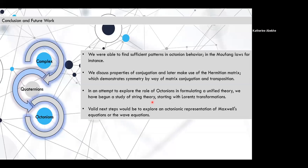We have analyzed the properties of the octonions because of the relationship between the symmetries of division algebras and supersymmetric theories. Although the octonions lack associativity and commutativity, we were able to find sufficient patterns in their behavior. And we did focus on the Lorentz transformations here, but Maxwell's equations and the wave equations are good openings, good areas that we can get into to extend to their octonionic representation.